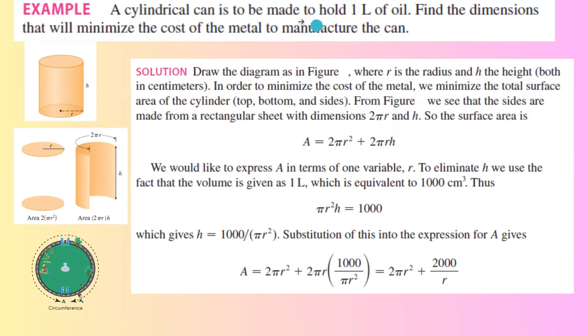From the question we know that the can can hold one liter or a thousand cubic centimeters of oil. It means that the volume πr²h of the can is equal to 1000 cubic centimeters. So you can write h in terms of r: h = 1000/(πr²).